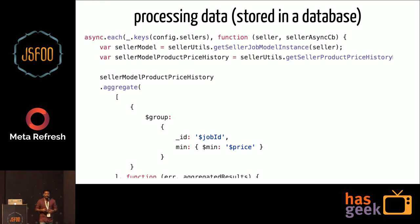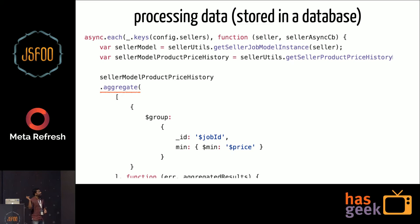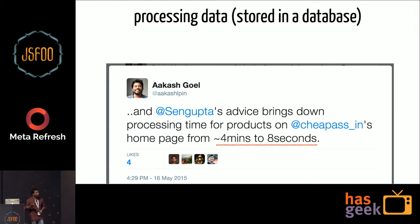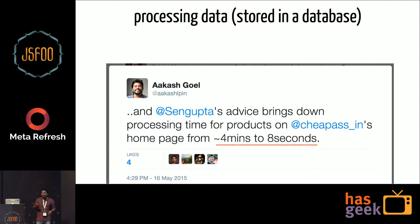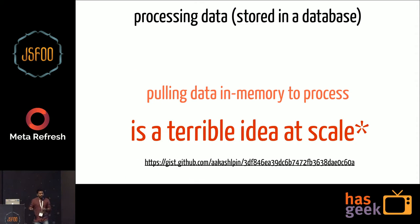I talked to colleagues at the workplace and they recommended using an API that the database exposes directly, instead of pulling everything into memory and then processing it. What I did was use MongoDB's aggregate, which works directly upon a collection. You can pass in a query, group by some expression, and believe it or not, it brought down the processing time from four minutes to about eight seconds. This was tweeted back on 16th May 2015. That code is still powering the products you see on the CheapAss server. Pulling data into memory to process is a pretty terrible idea at scale — be very careful of what your find statement is bringing into memory.